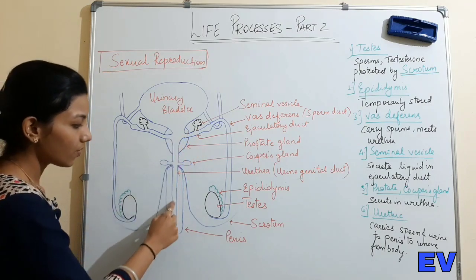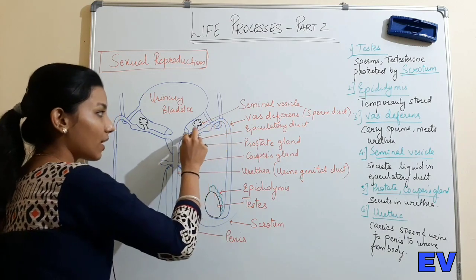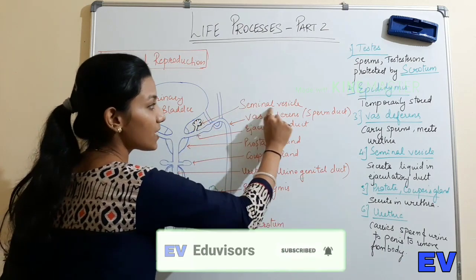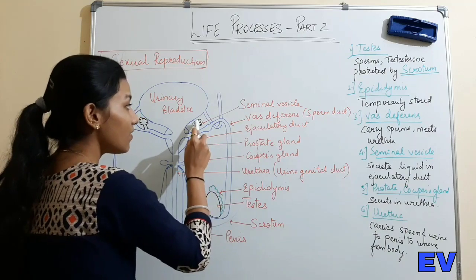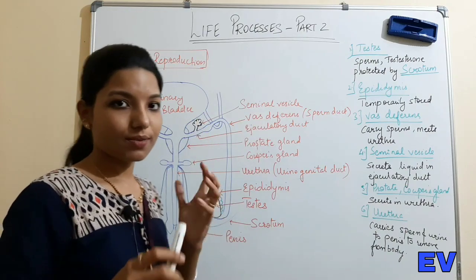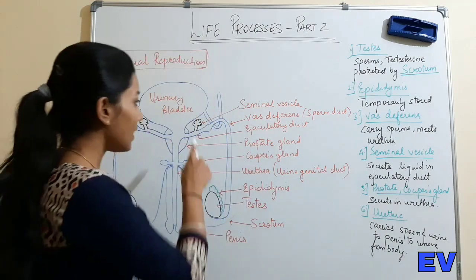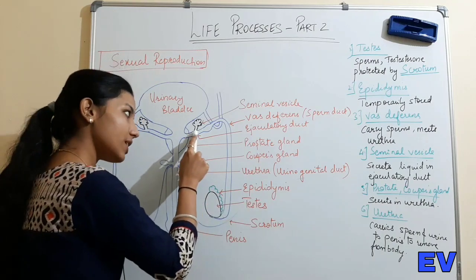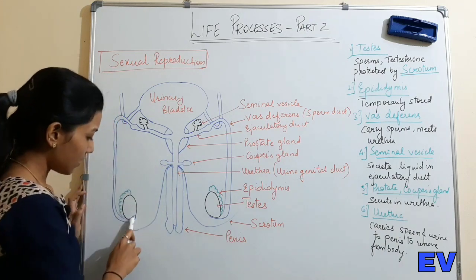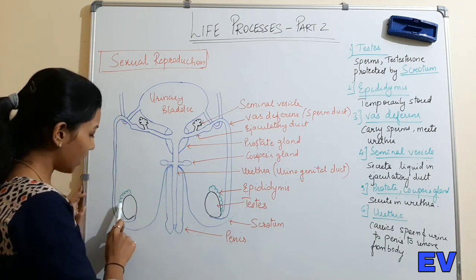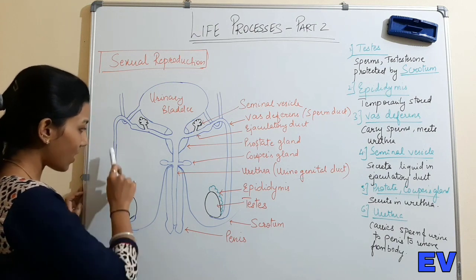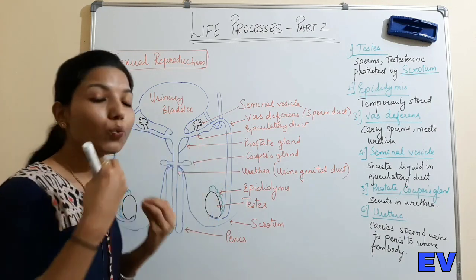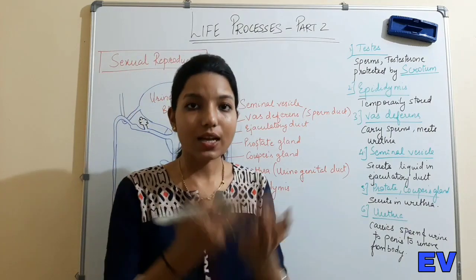The vas deferens goes and meets the urethra. Before meeting the urethra, it passes through the seminal vesicle. The seminal vesicle secretes some liquid into the sperms. This liquid provides nutrients to the sperms, just like we need nutrients - sperms also need nutrients to function.